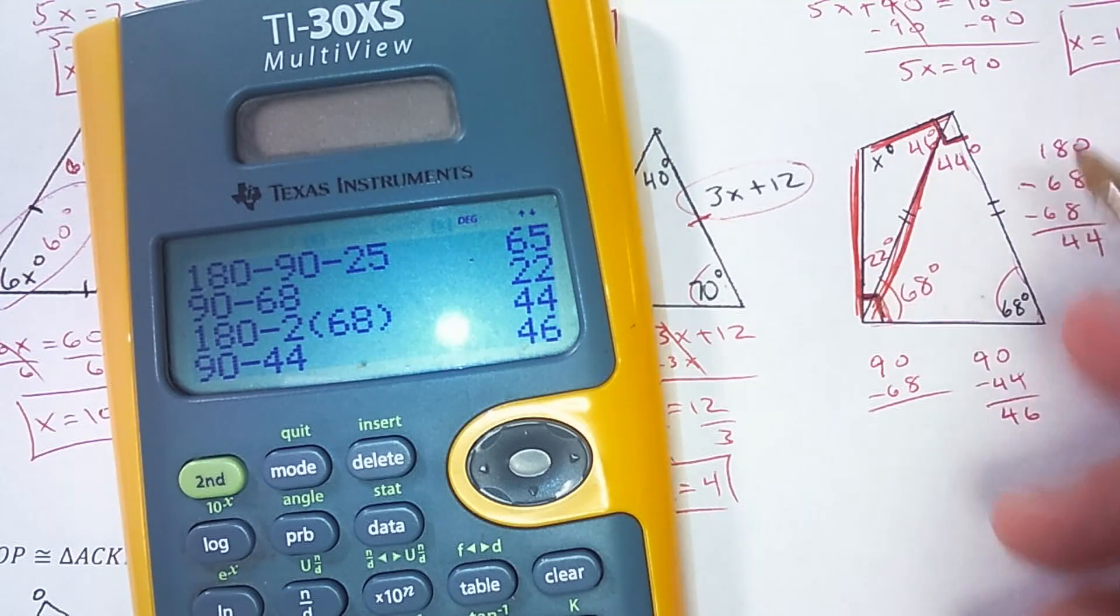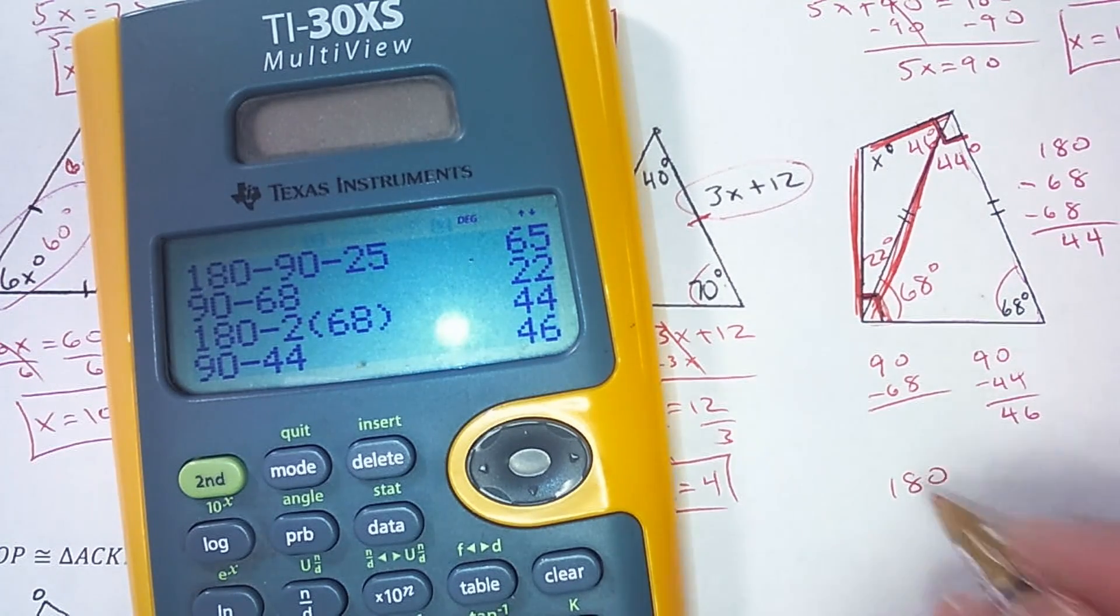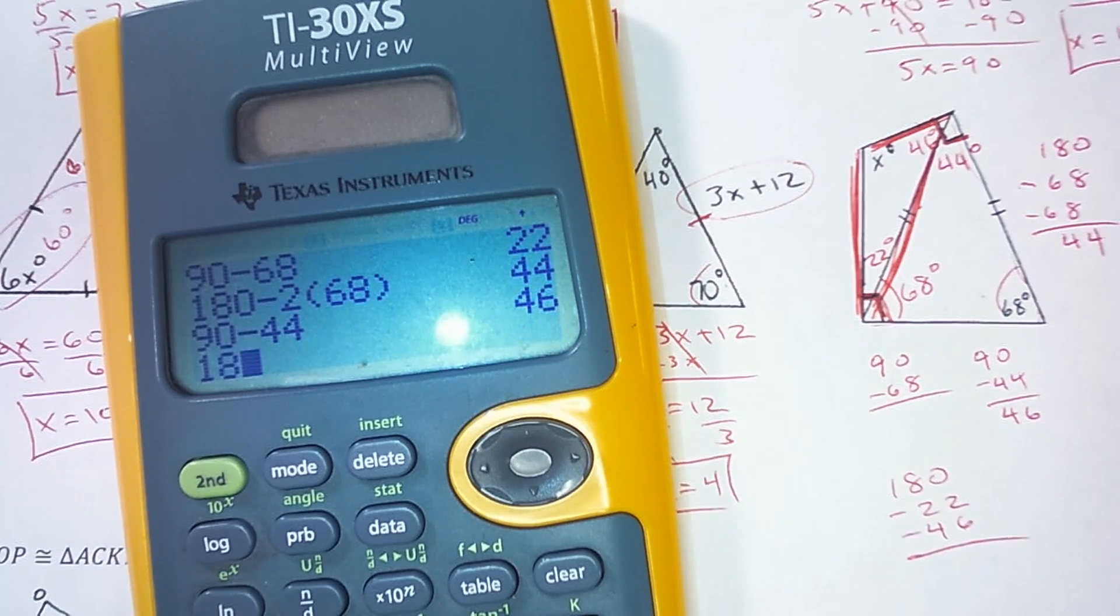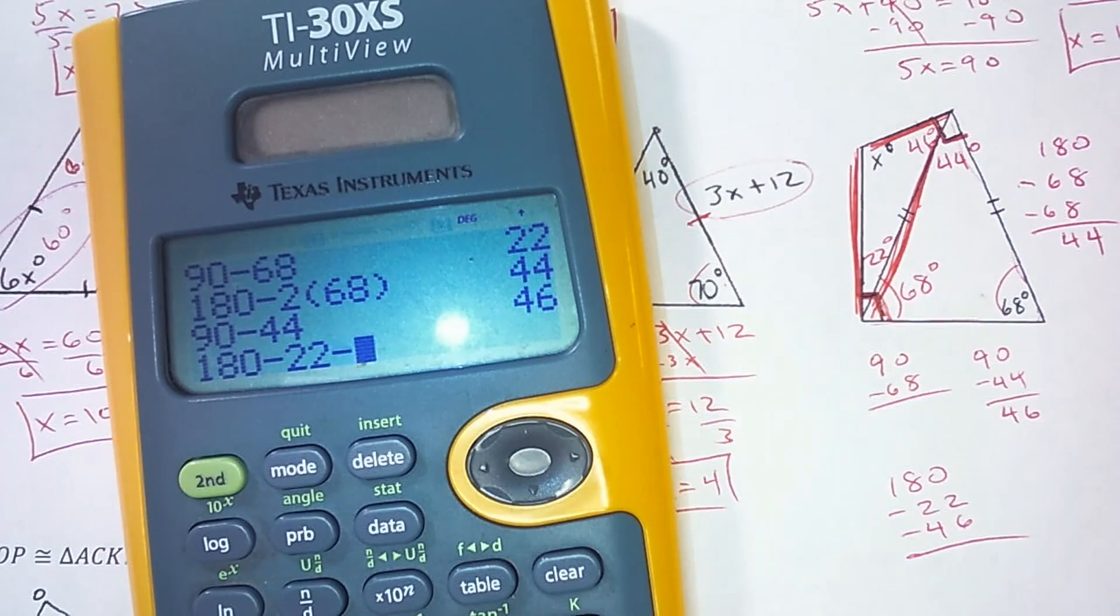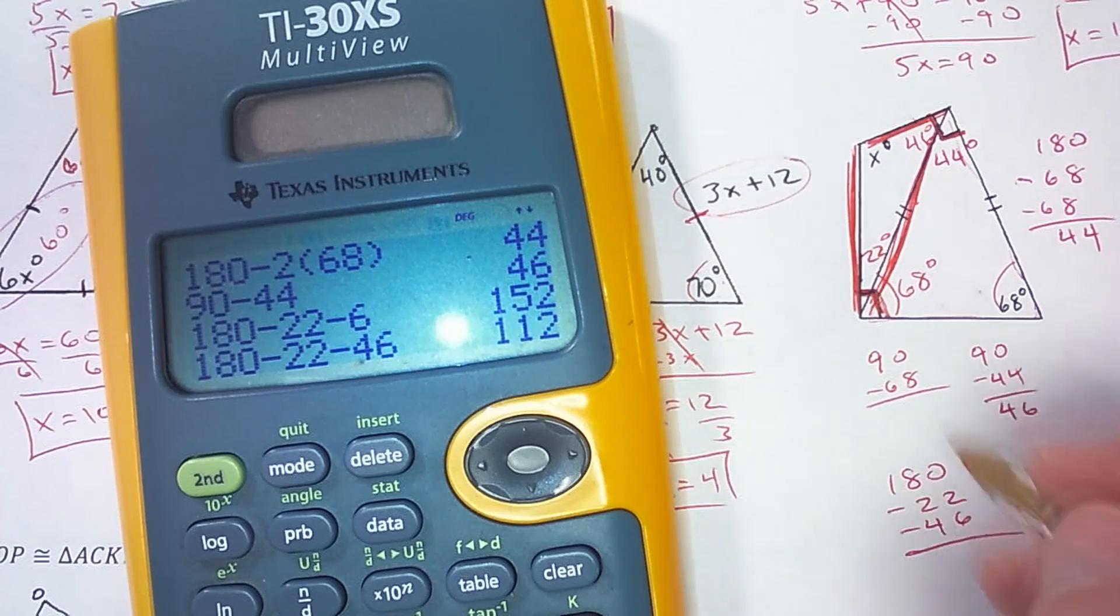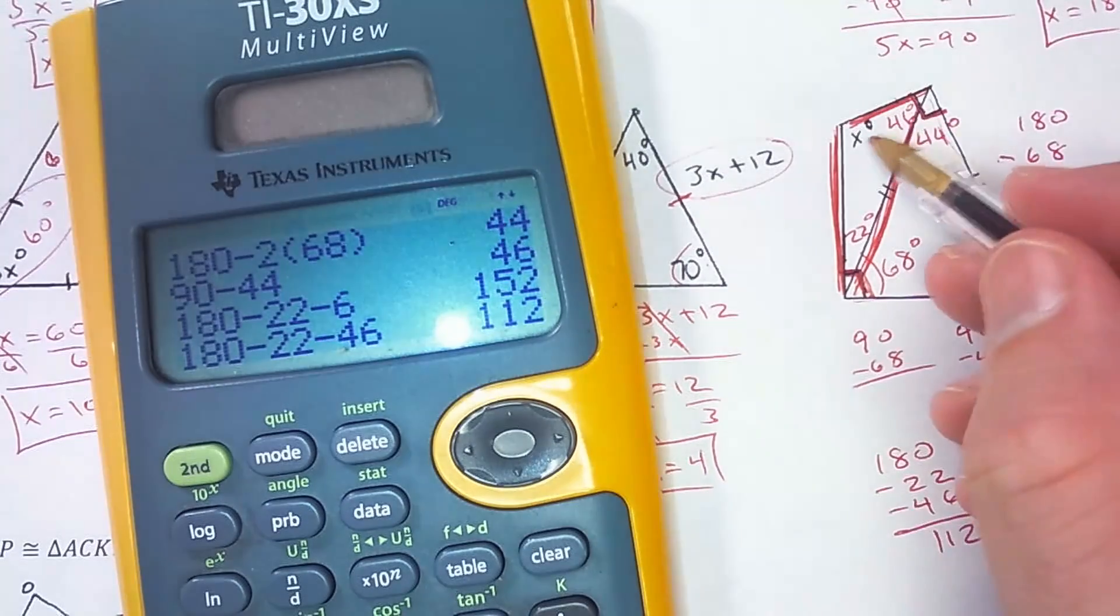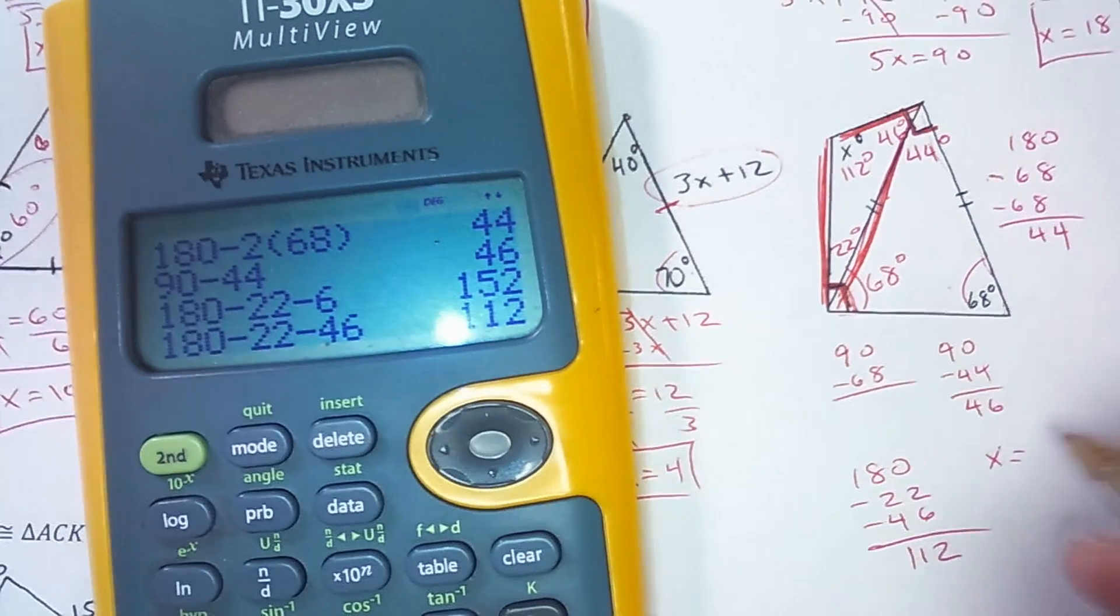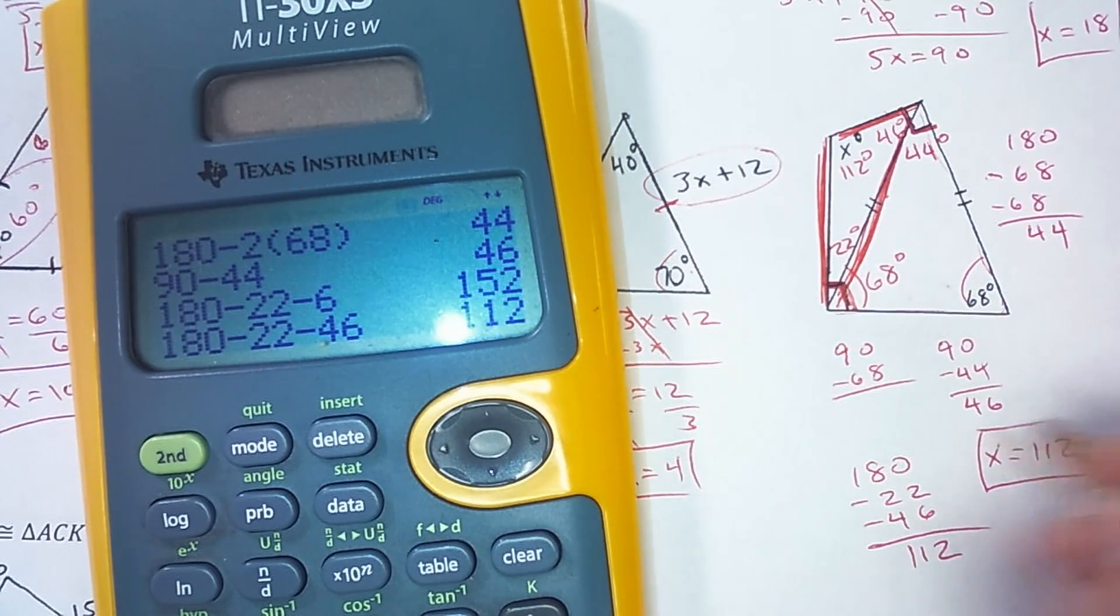180 degrees total. So I take the 180 total and subtract 22 and 46. And that is 112 degrees. So that's right here, 112 degrees. So x equals 112.